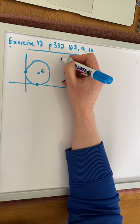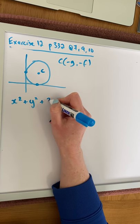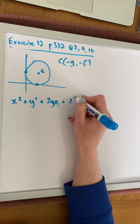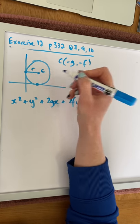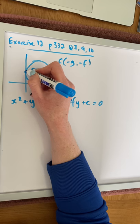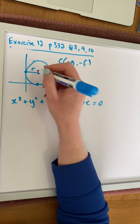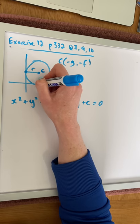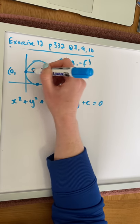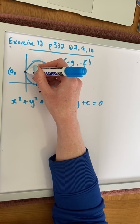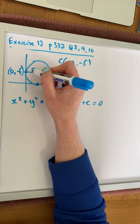Remember, the center c has coordinates (-g, -f) when we're looking at the general equation of a circle: x² + y² + 2gx + 2fy + c = 0. The radius, looking at the diagram, if the center point is at (-g, -f), the intersection point on the y-axis will have an x-coordinate of zero. The y-intersection point on the y-axis is going to be the same height as the center, therefore we are looking at -f as our y-point.